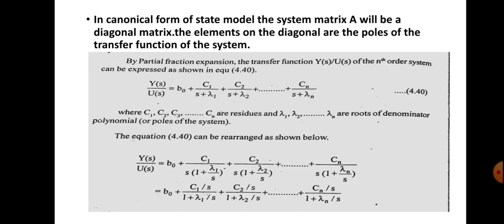In the case of canonical form of state model, the system matrix A will be a diagonal matrix, and the elements on the diagonals are the poles of the transfer function of the system. We have represented the state-space model for a system by using the equation x-dot(t) = A·x(t) + B·u(t), where A is called the system matrix.